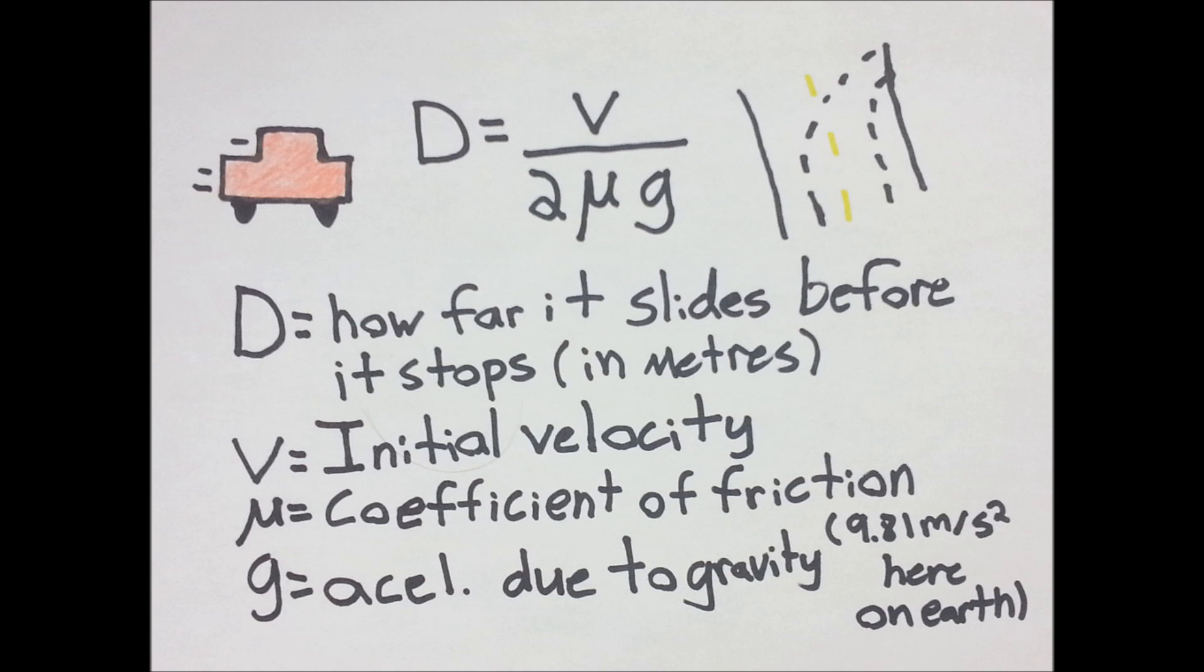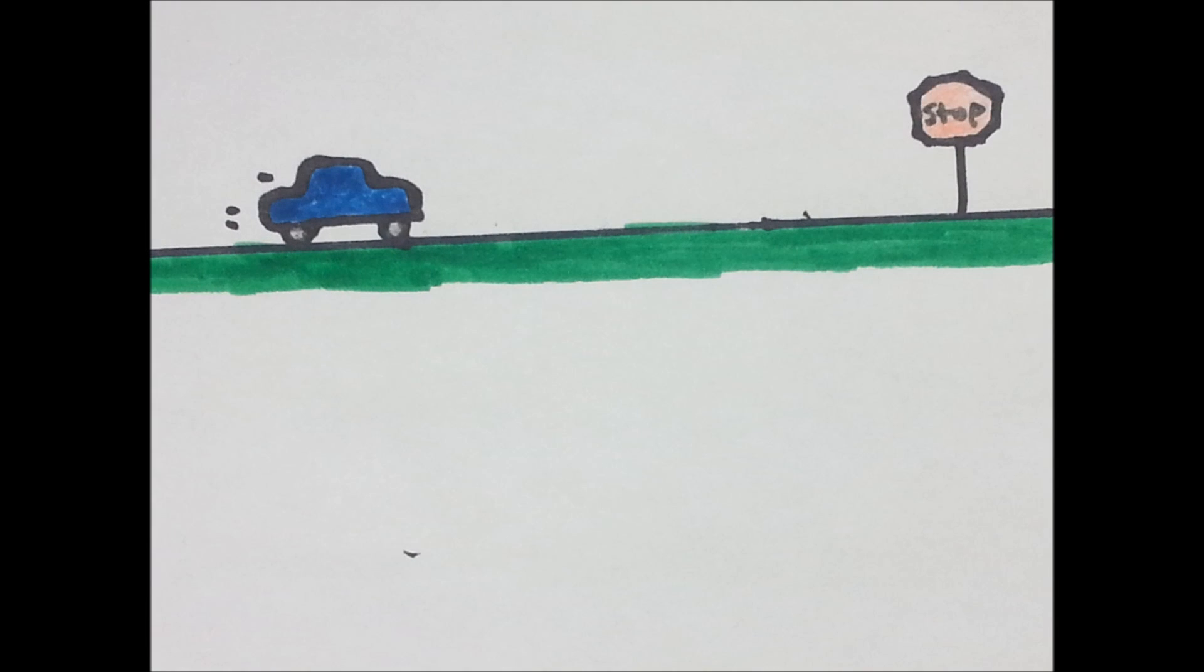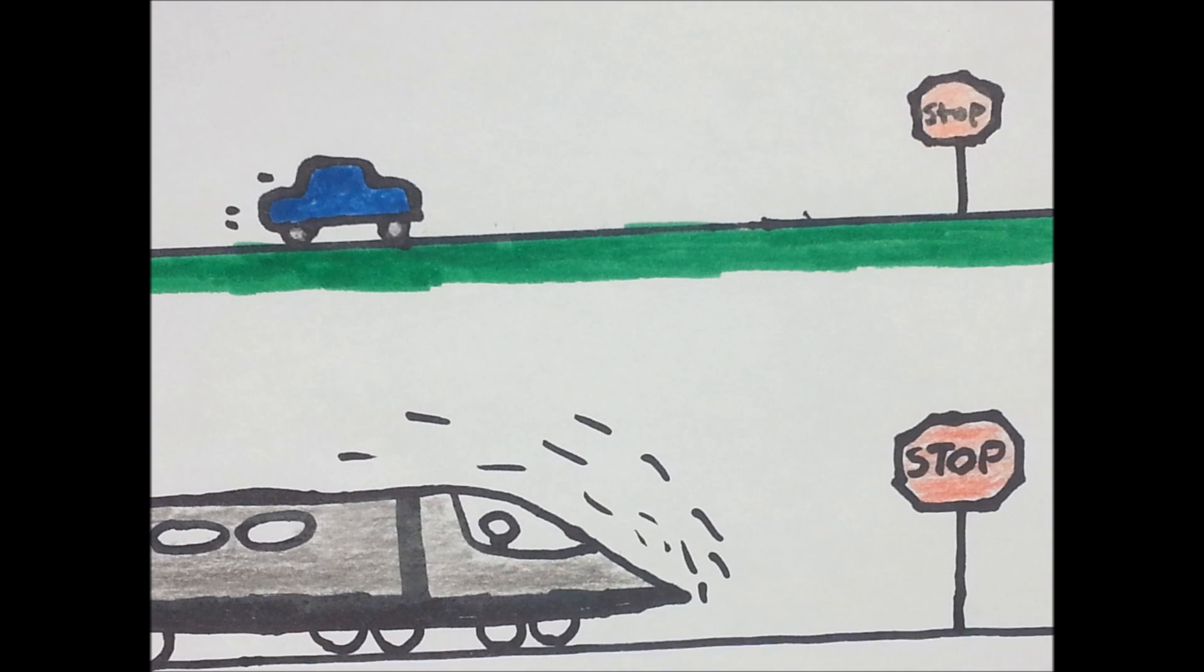So with this formula, we can figure out lots of things, like how far a car will slide after braking at 100 kilometers an hour, or how far a super speed train will stop after slamming on the brakes at 360 kilometers per hour.